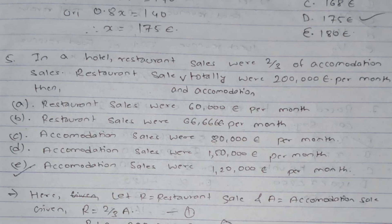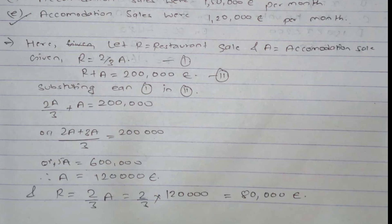Question 5: In a hotel, restaurant sales were two-thirds of accommodation sales, and restaurant and accommodation sales together totalled €200,000 per month. We need to find the accommodation sales. Let restaurant sales = r and accommodation sales = a. From the first condition: r = (2/3)a. From the second condition: r + a = 200,000.